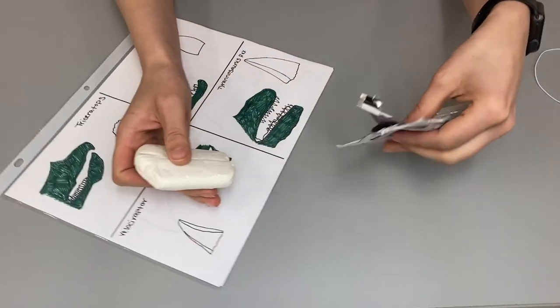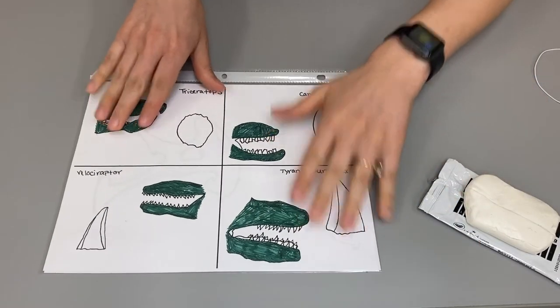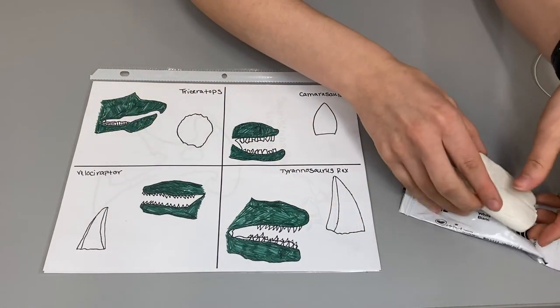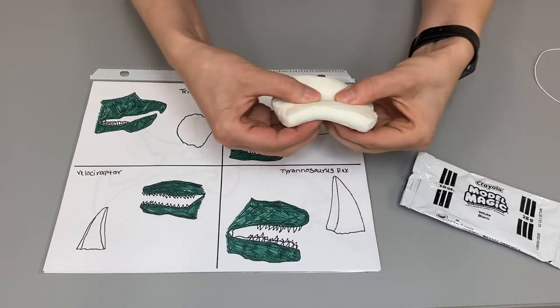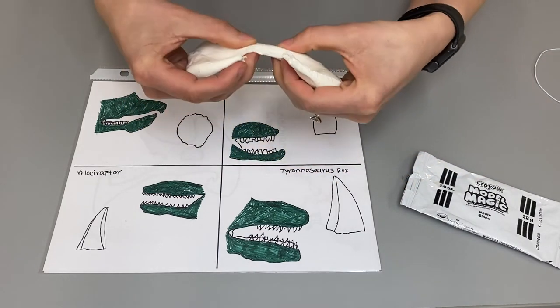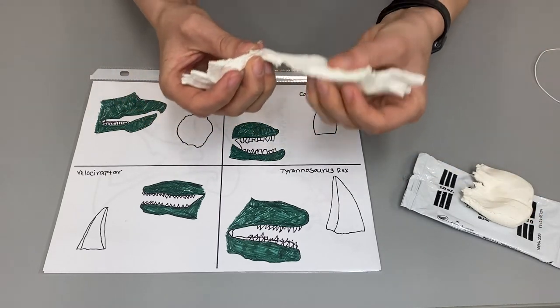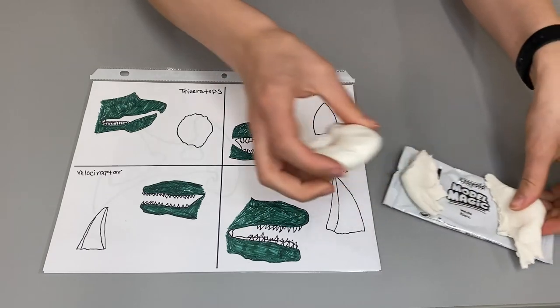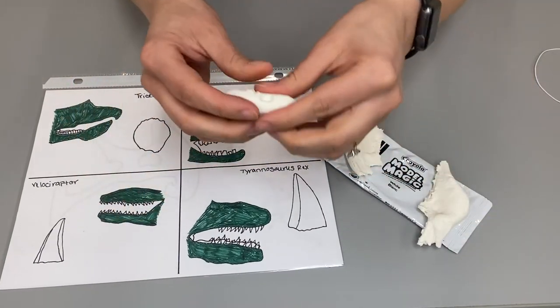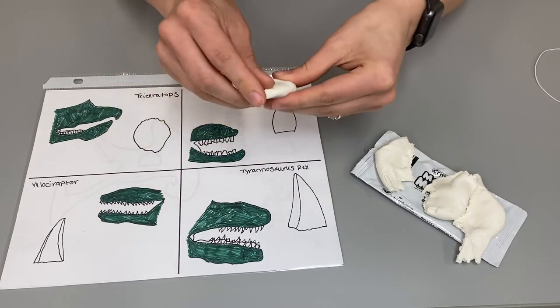Now, let's go ahead and start by opening up our pack of model magic, and go ahead and begin to separate it into four pieces. If you would like for the teeth to be smaller or larger, you can go ahead and separate it depending on the size that you want. Now, you have four dinosaurs to choose from on the template. Feel free to start on whichever one you'd like. I'm going to go ahead and start on the triceratops.